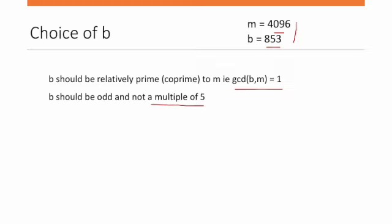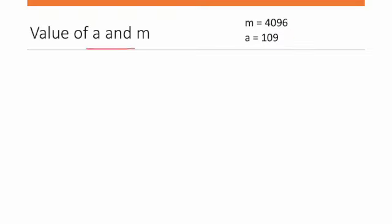4096 has many divisors: 2, 4, and other powers of 2. The only common divisor is 1. So gcd(b,m) = 1. And 853 is odd and not a multiple of 5.